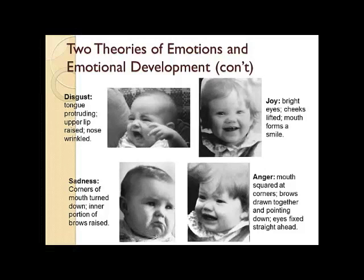Then there's joy — one of the favorites. You'll see very bright eyes, lifted cheeks, and a big smile. It's pretty easy to see when a child is really experiencing joy, and we tend to react very positively to that facial expression. Then there's sadness, where the corners of the mouth are turned down and the inner portions of the brows are raised. And there's anger, where the mouth is squared at the corners, the brows are drawn together and pointing down, and the eyes are fixed straight ahead.